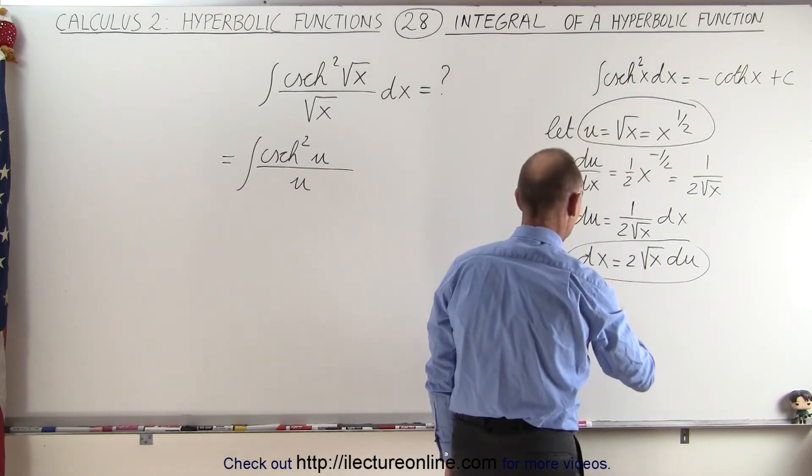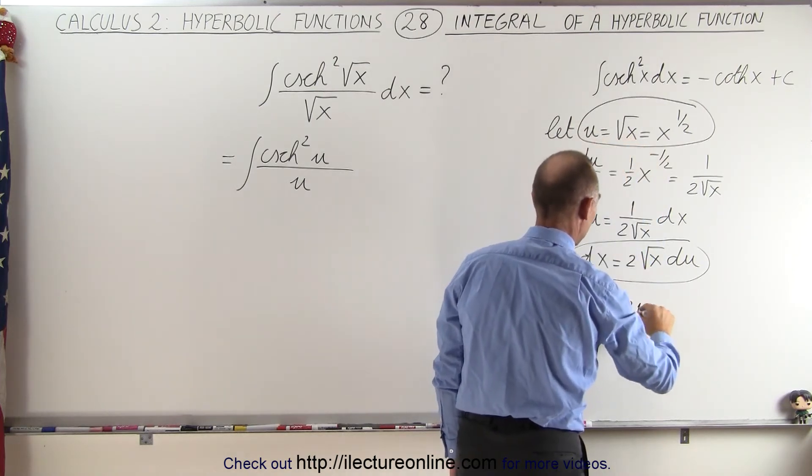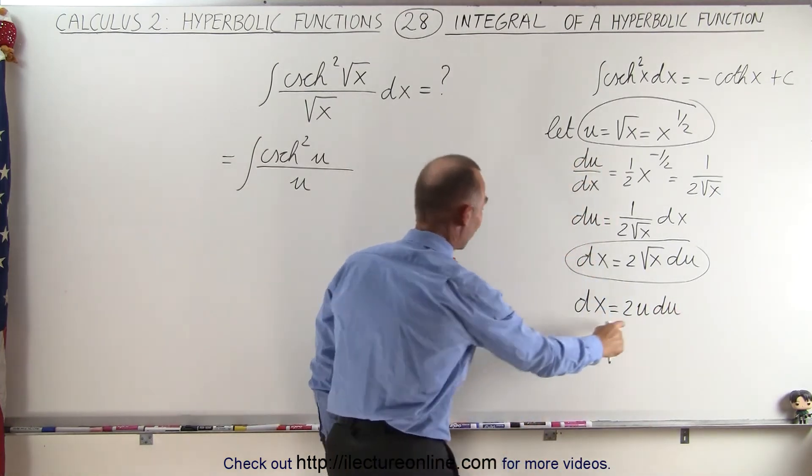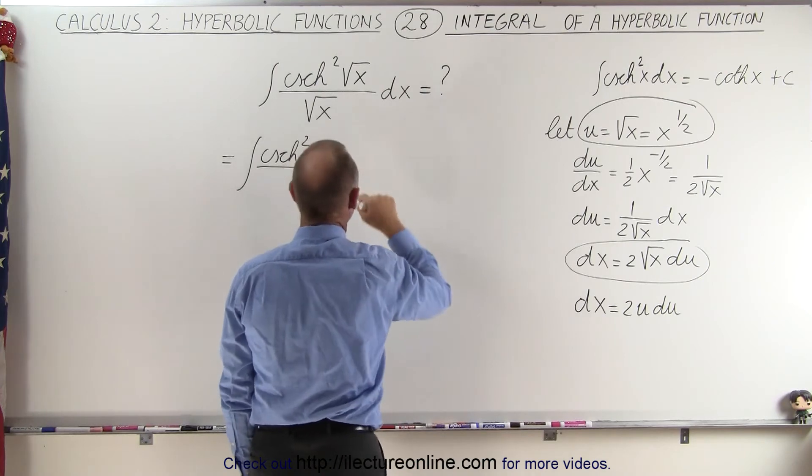So this could be written as dx is equal to 2 times u du, and that's a better substitution. So when I plug that in for dx I get the following.